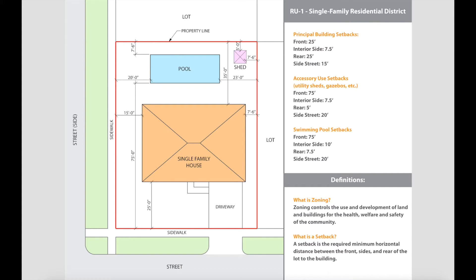So what are building setbacks and where do they come from? Your local zoning code will have established building setbacks for different uses throughout your city. Residential, commercial, and industrial uses will all have different building setback requirements. The zoning code controls the use and development of land and buildings for the health, welfare, and safety of the community.